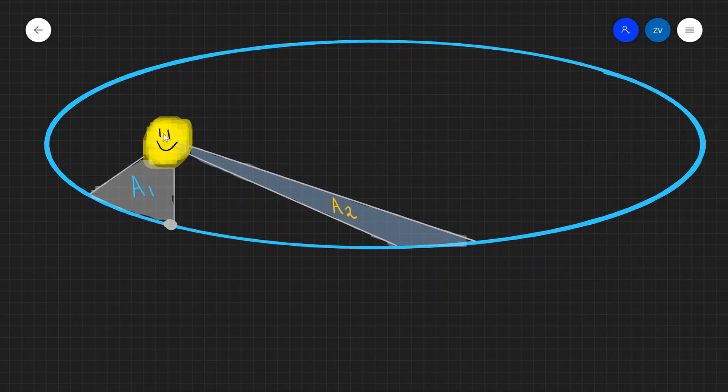This is my artistic impression of the sun over here, and let's say that in one month the planet goes from here to there. Let me draw the planet here as well. So this area that is being swept by this line segment is one month.